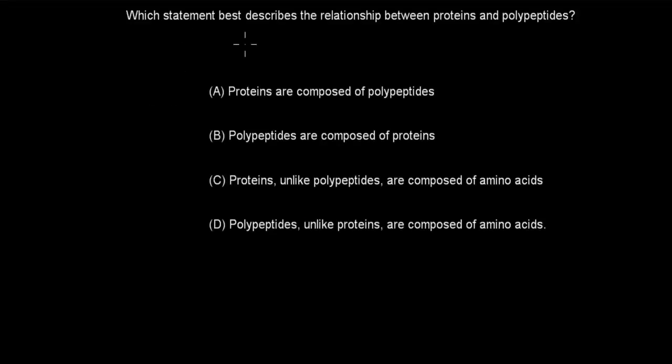Next question. Which statement best describes the relationship between proteins and polypeptides? A. Proteins are composed of polypeptides. B. Polypeptides are composed of proteins. C. Proteins, unlike polypeptides, are composed of amino acids. D. Polypeptides, unlike proteins, are composed of amino acids. Pause the video and attempt the question.